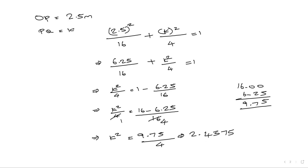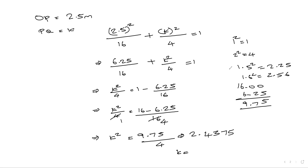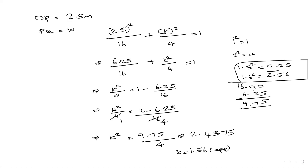So k² = 2.4375. Now k is the approximate square root value. Since 1.5² = 2.25 and 1.6² = 2.56, the value lies between them. Approximately k ≈ 1.56 meters — this is the height of the arc.